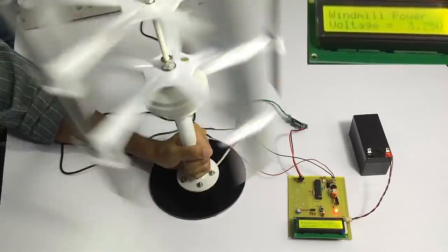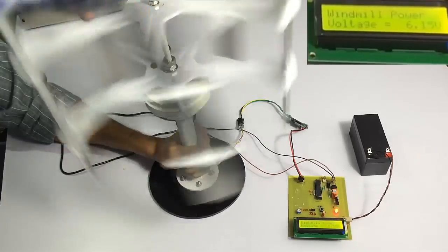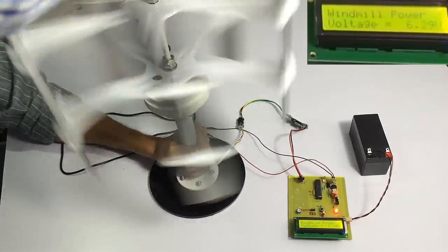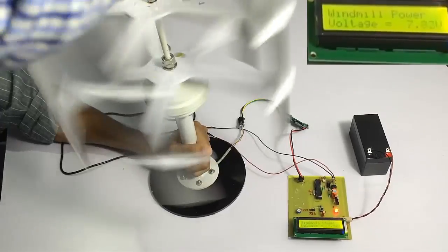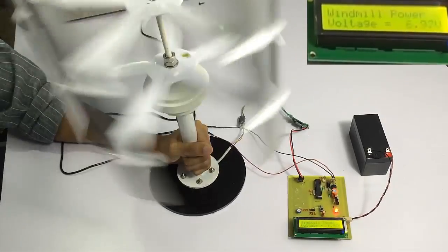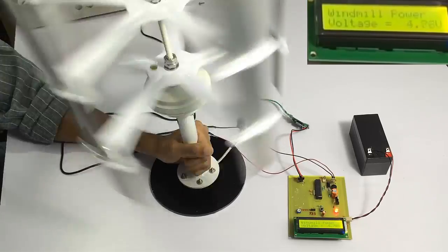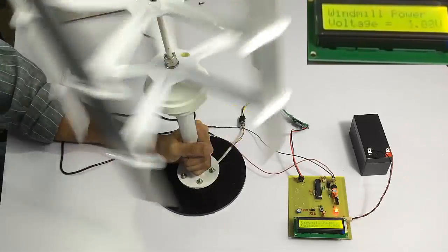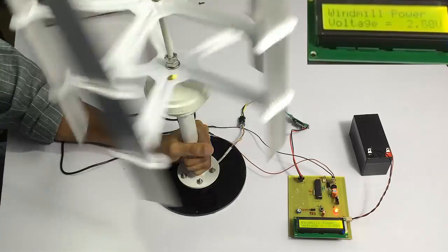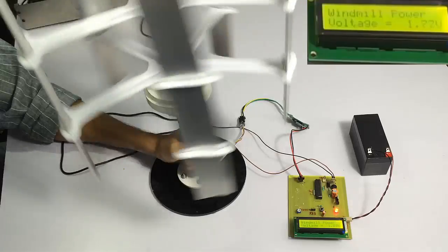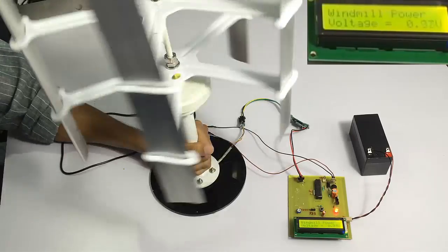It generates up to nine volts. As we spin it faster and faster, it gives increasing voltage. This voltage is then used to charge the battery. This is how the windmill power generator project works. Thank you.